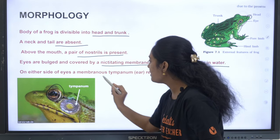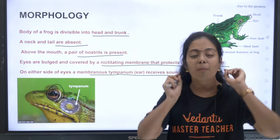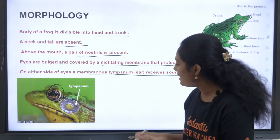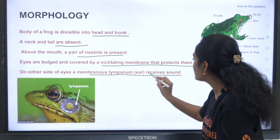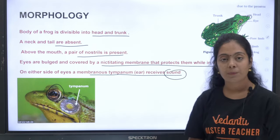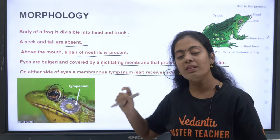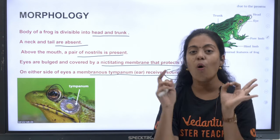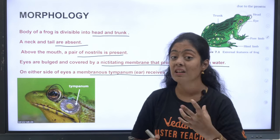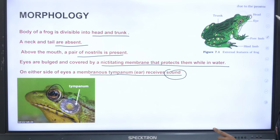On either side of the eyes, there is a membranous tympanum. Frogs do not have external ears like mammals. They have a tympanum-like structure which acts as the ear and receives sound. The tympanum is their only auditory organ — the organ used in hearing.